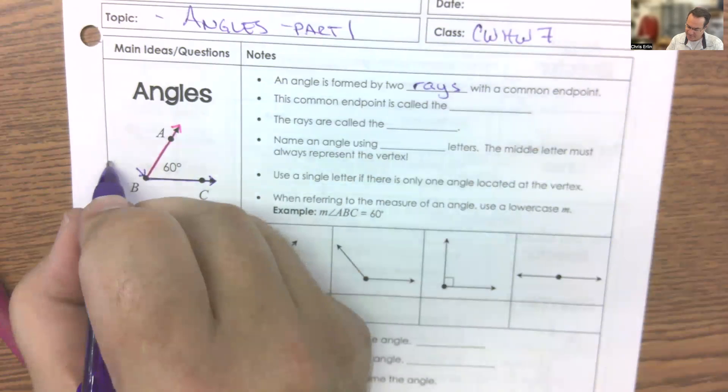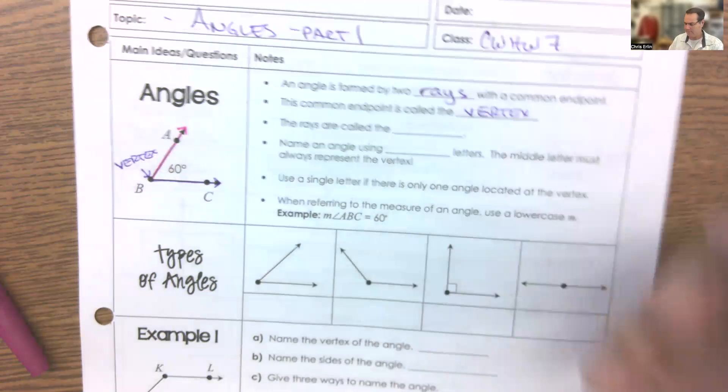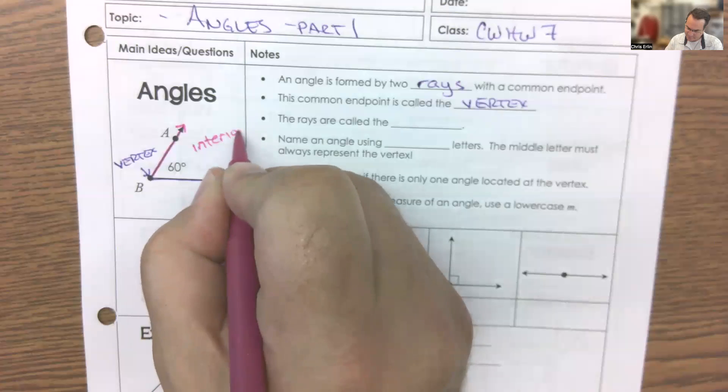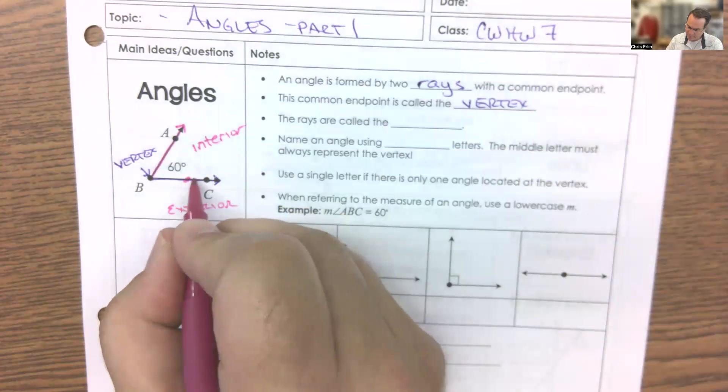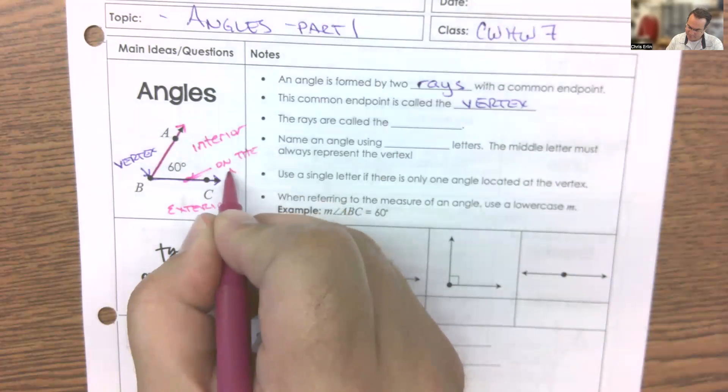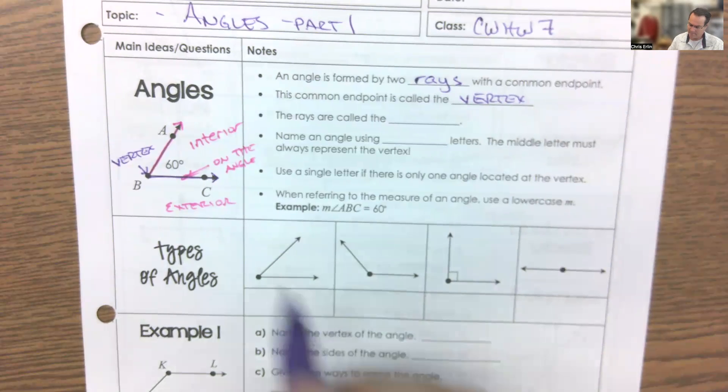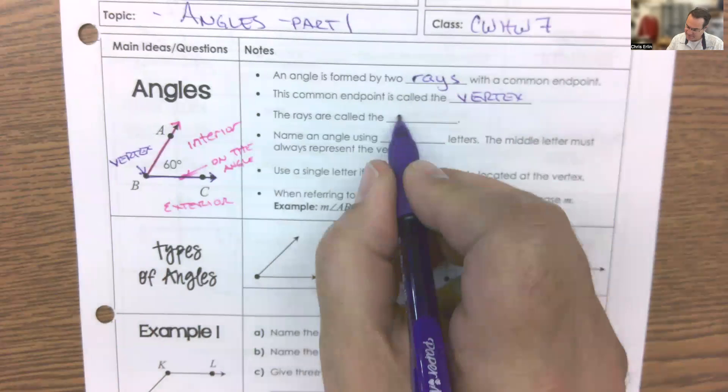This common endpoint in an angle is called the vertex. And there will be times when we're referring to things like the interior of the angle, the exterior of the angle, or on the angle. Please add those notes. These rays that separate the interior from the exterior are also known as the sides of the angle.